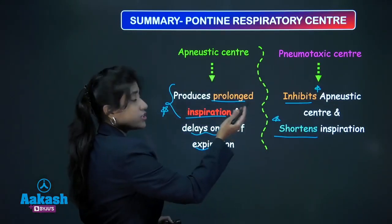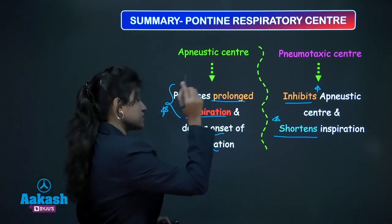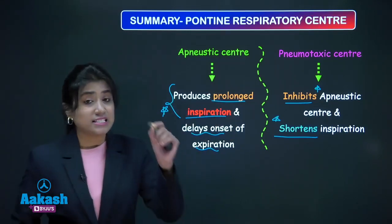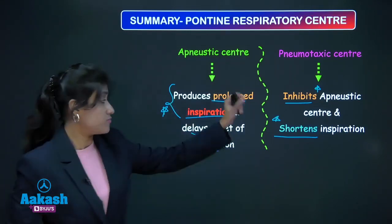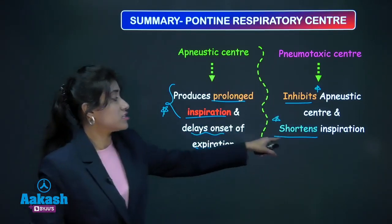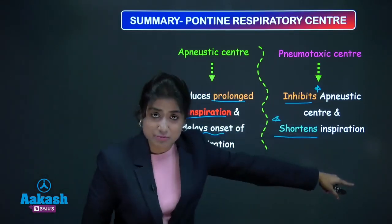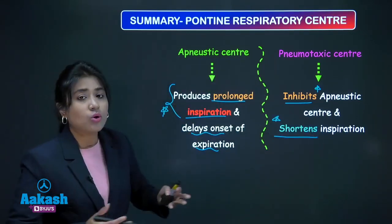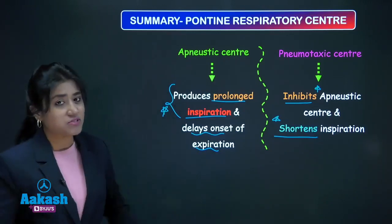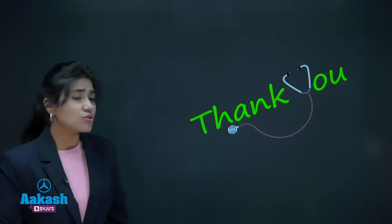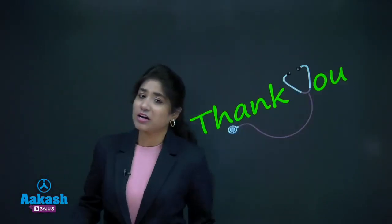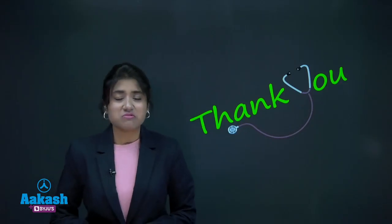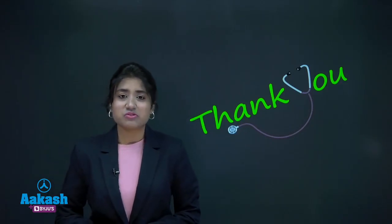Remember, it is very important — the pneumotaxic center inhibits the apneustic center, and that is the reason it shortens inspiration, while the apneustic center prolongs inspiration. This was all about the recap of neural regulation of respiration. Thank you so much.